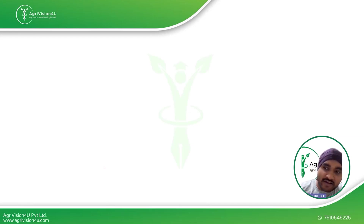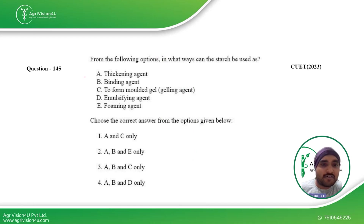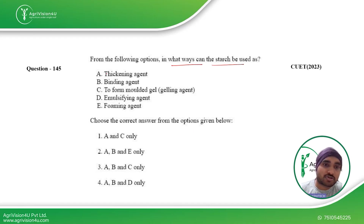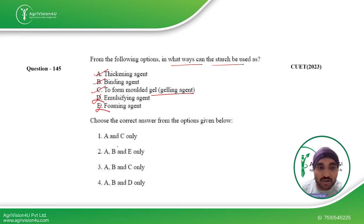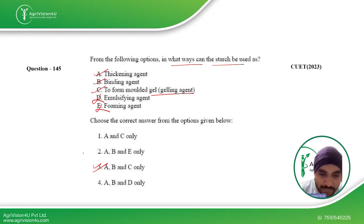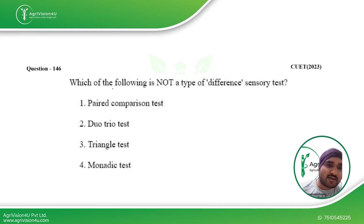Which of the following are ways starch can be used? Starch can be used as a thickening agent, a binding agent, and a gelling agent. However, it cannot be used as an emulsifying agent or a foaming agent. Therefore A, B, and C are the correct answers, making the third option right for this question.